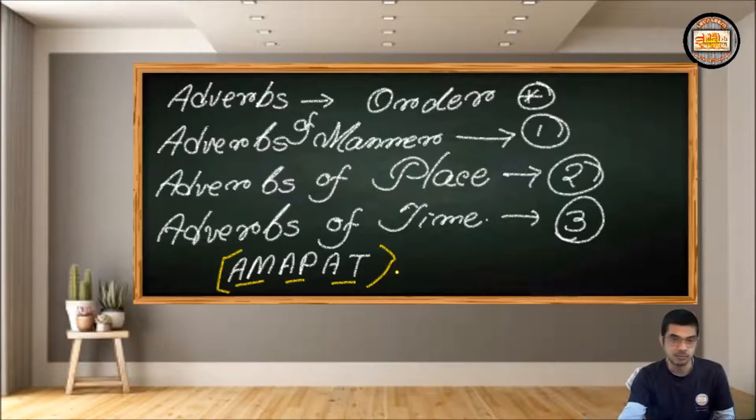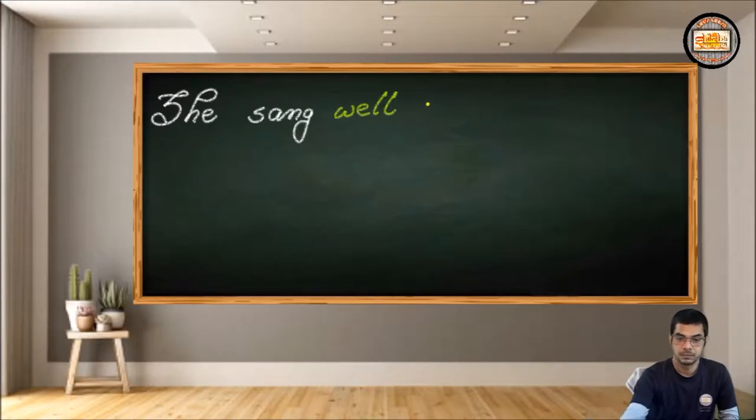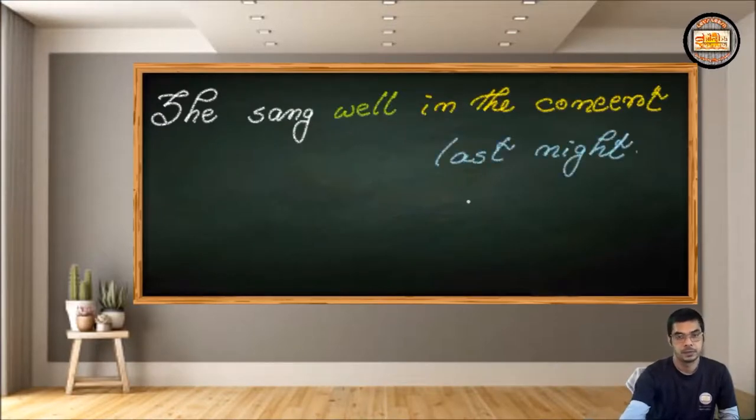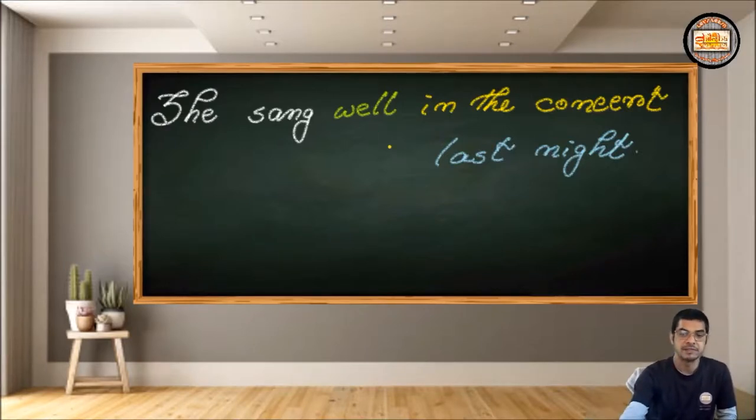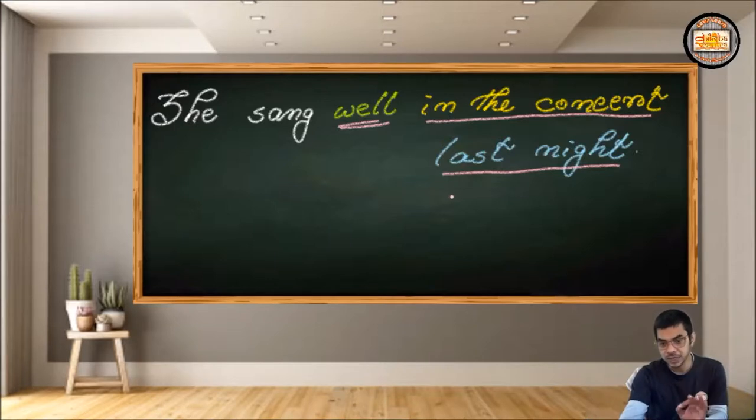But it's not all because we have to check an example. Without an example, it's very difficult to find out what I'm saying here. So let's check an example first. Yes, dear friends, here we have a sentence. She sang well in the concert last night. Now if you follow what I have done, there I have used three different colors. I have written well in green, then in the concert in yellow, and last night in blue. So these three expressions are actually three adverbs that we have here in this sentence.